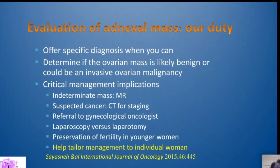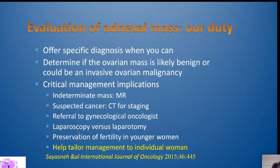In summary, it is really important to offer a specific diagnosis — we cannot just say 'this is a mass.' We need to tell the clinician whether the ovarian mass is something we can readily diagnose, whether it is likely benign, or whether it could be an ovarian cancer, because there are critical management implications. For indeterminate masses, recommend MRI. If ovarian cancer is suspected, refer to a gynecological oncologist and consider CT for staging, laparotomy versus laparoscopy, and fertility preservation in younger women. Our role is to help tailor management to the individual patient.